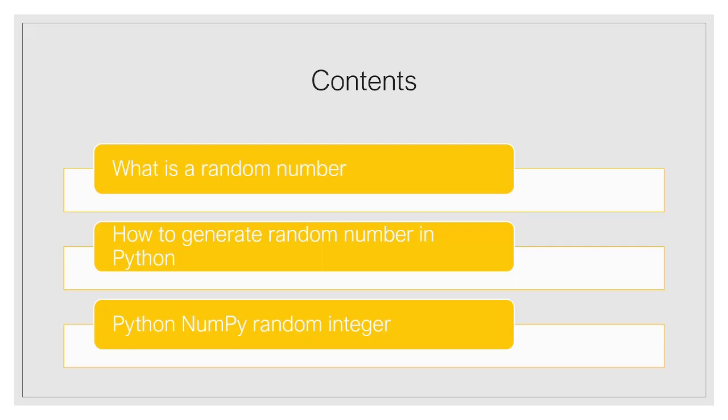First we will see what is a random number, then we are going to see how to generate random numbers in Python, and after that we are going to focus on the NumPy function. Basically, random is a module available in the NumPy library. This module returns an array of specified shape and fills it with random floats. It is based on pseudo-random number generation, which means it is a mathematical way that generates a sequence of nearly random numbers. It is a combination of a bit generator and a generator.